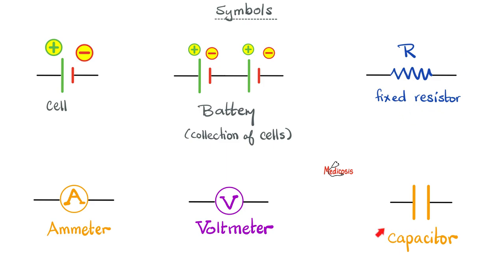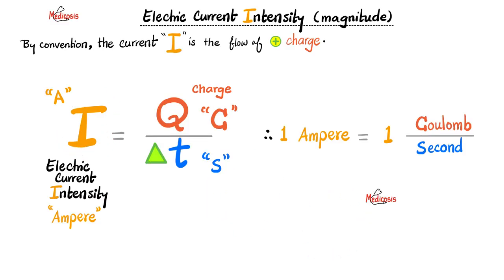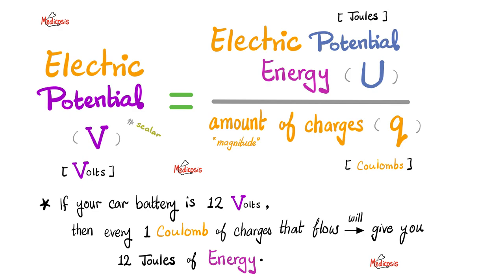I have talked about resistors and capacitors in another video in this physics playlist. Now let's start with electric current intensity — the magnitude of the electric current measured in amperes equals the quantity of charges divided by time, so 1 ampere equals 1 coulomb per second. Next, the electric potential difference — the voltage — equals electric potential energy divided by the amount of charges, so it is U over Q or E over Q.